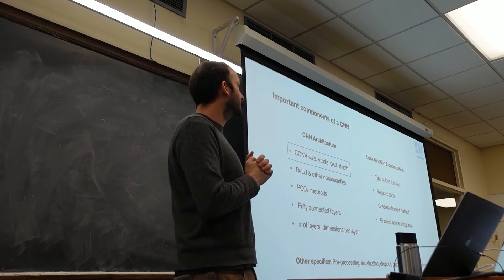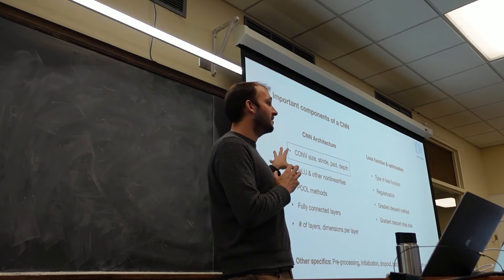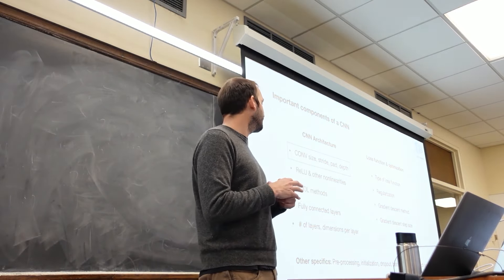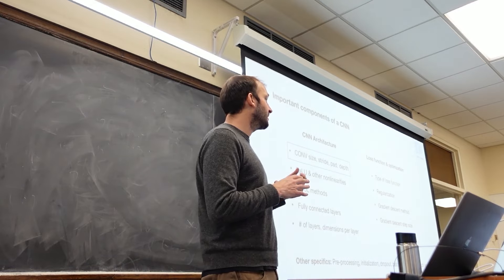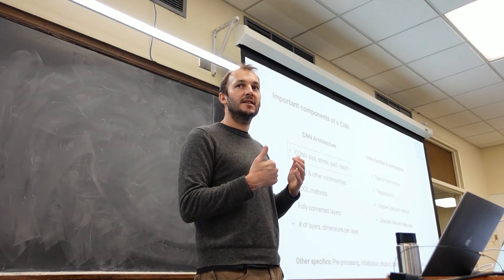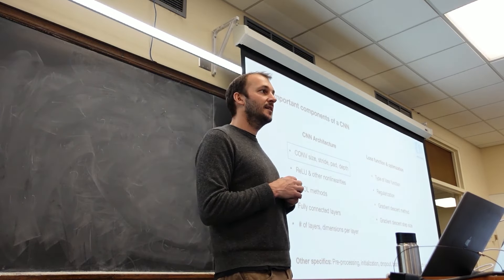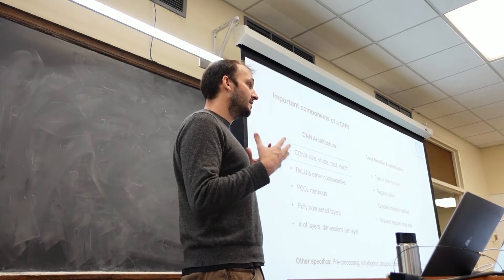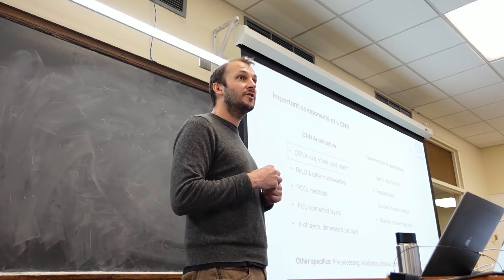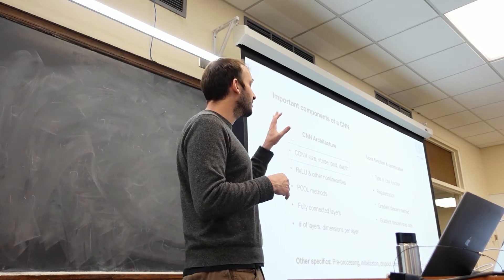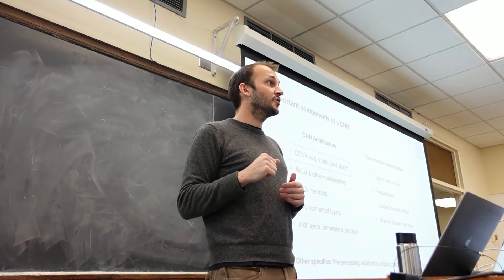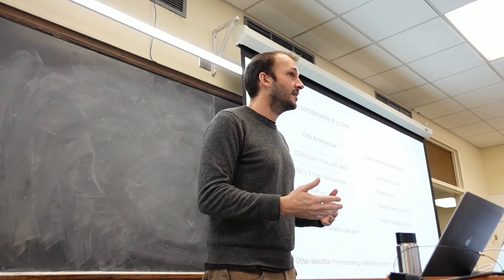There are three categories to consider. One is architectural decisions — these are how the network is statically constructed. Then once you hit Go, there are decisions on how the process of utilizing that static network to optimize for your particular machine learning goal are executed. Those are primarily driven by the loss function and type of optimization you're telling TensorFlow to execute.